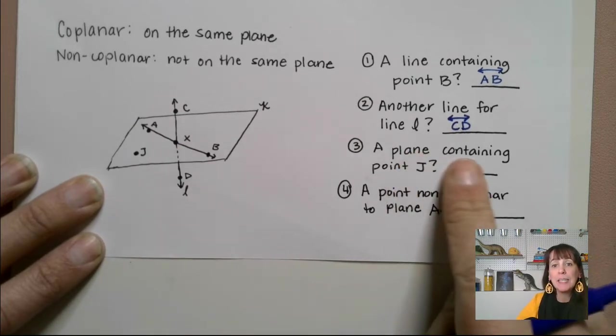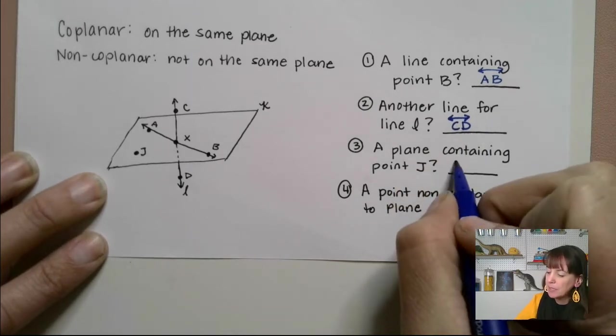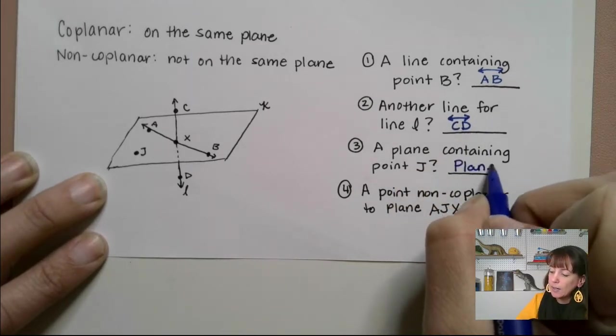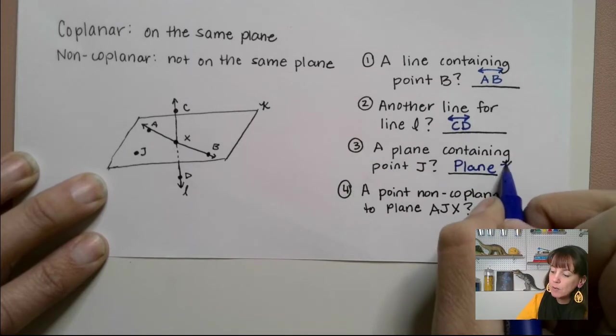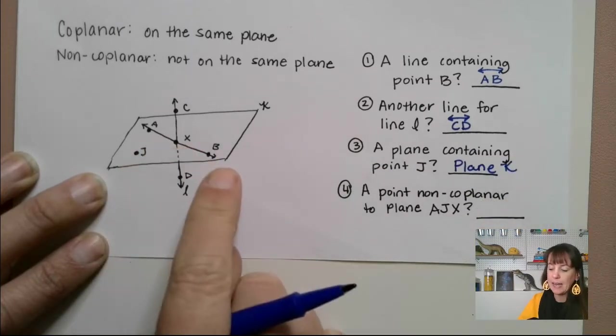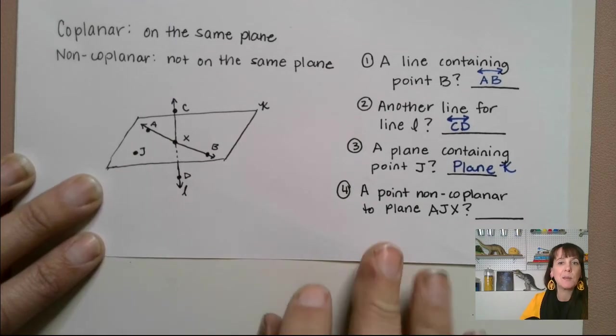Now, a plane containing point J - we could say plane K, where it's in that script, or we could say plane JXA, BXJ, something like that.